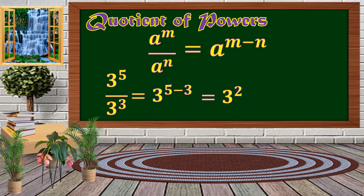3 squared means 3 times 3, which equals 9. That is the Quotient of Powers.